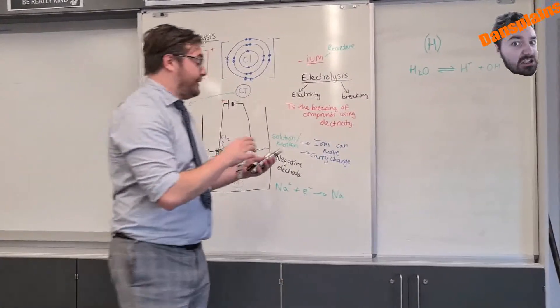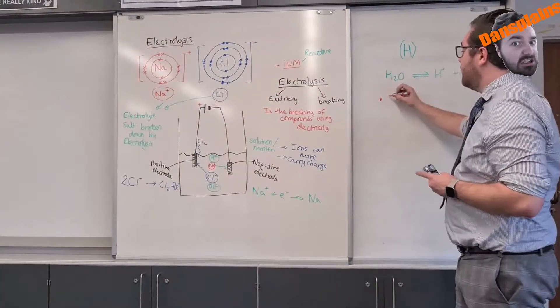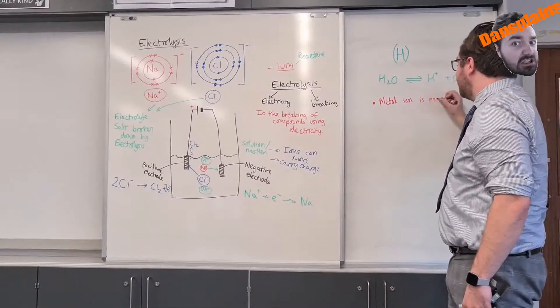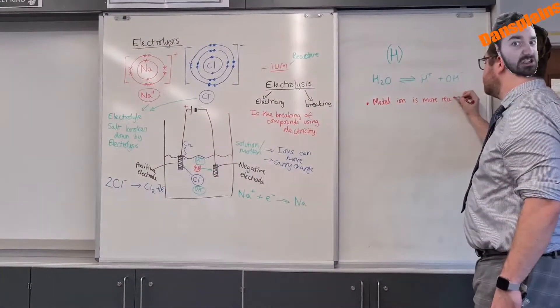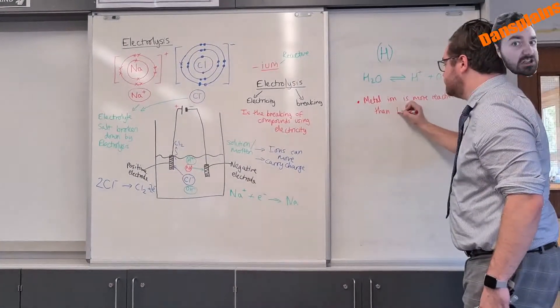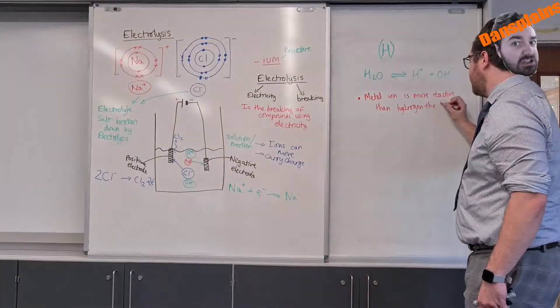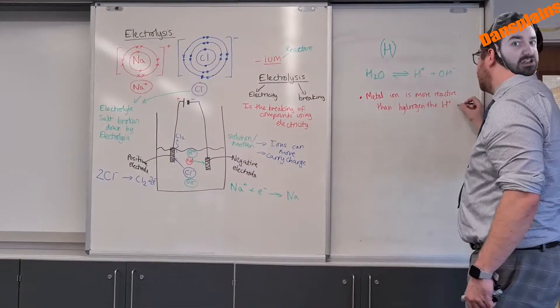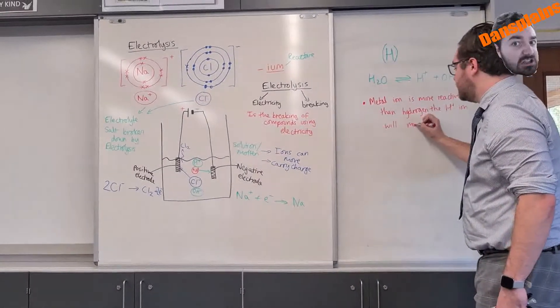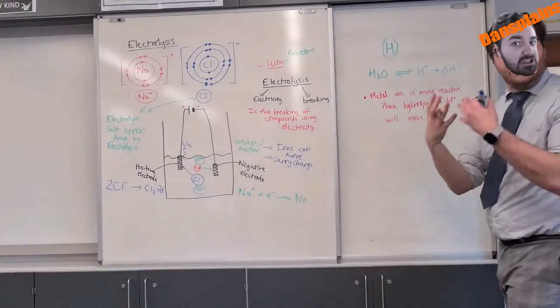Now if the metal ion is more reactive than hydrogen, the hydrogen will move instead. H+ ion will move instead because if you can think about it the metal ion is going to keep hold of its charge much better than the hydrogen.